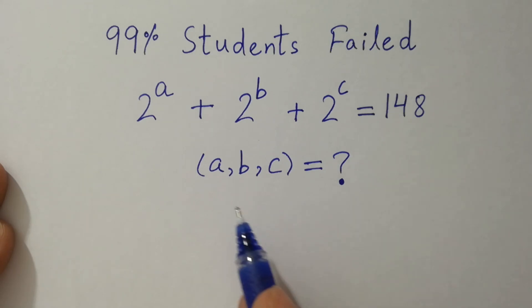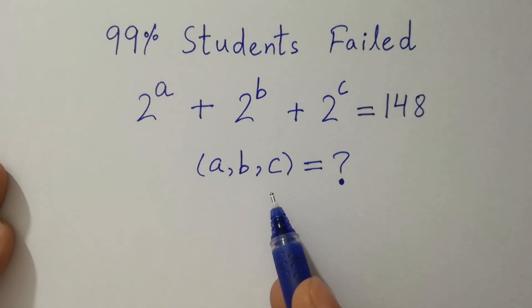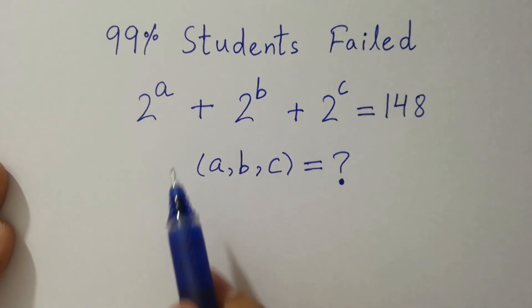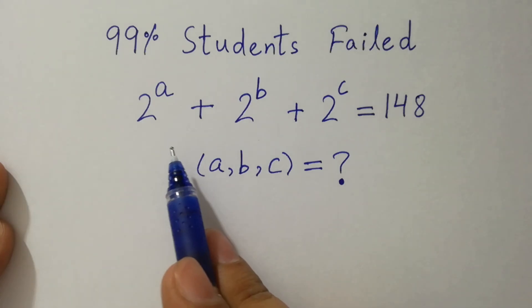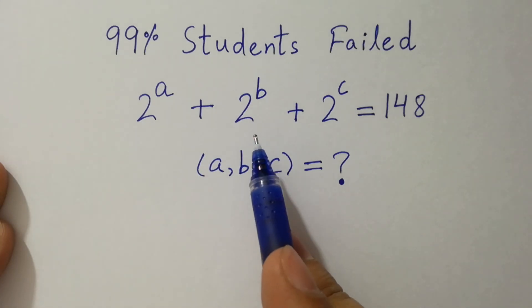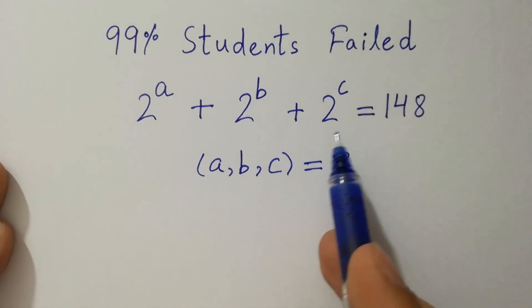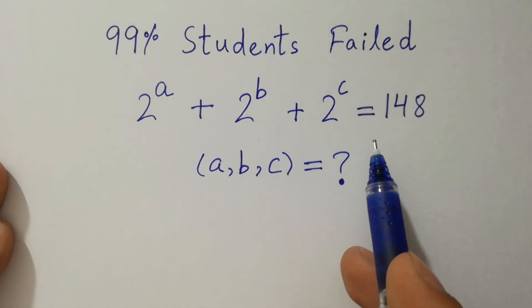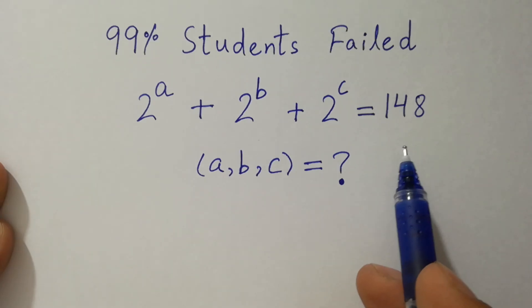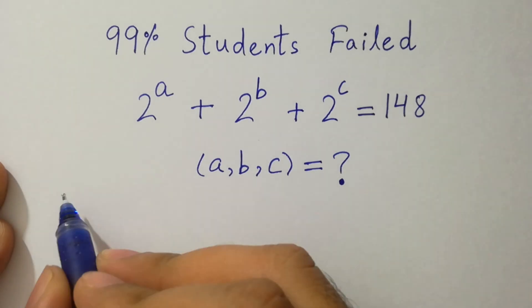Hello friends, find the value of a, b and c if 2 to the power a plus 2 to the power b plus 2 to the power c equal to 148. Let's have a solution.